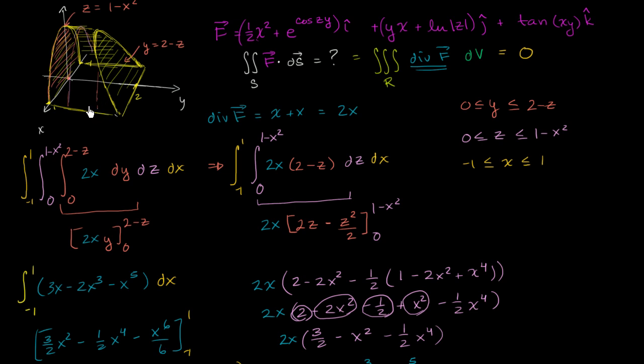So why is that? Well, the simple way to think about it is when we took the divergence of f, this vector field f is hard to visualize, but the divergence of f is fairly easy to visualize. The divergence is equal to 2 times x.